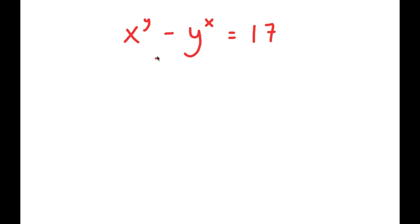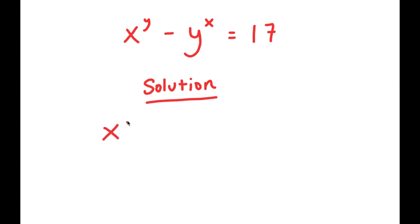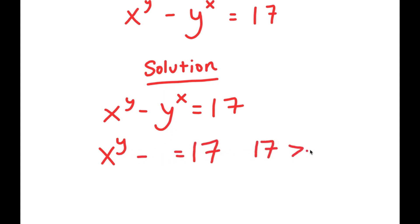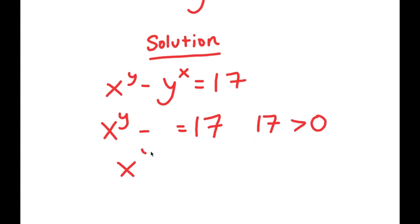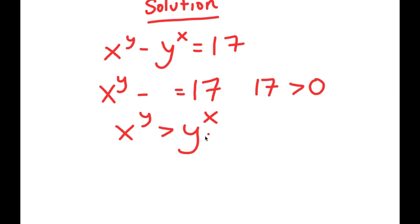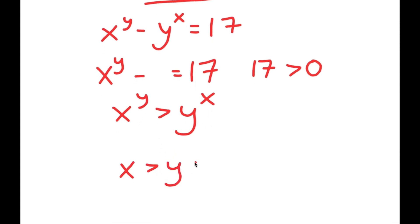In this problem, I have x to the power of y minus y to the power of x is equal to 17. To solve this, just by looking at this equation, notice how x to the power of y minus something equals 17, and 17 is greater than 0. This means x to the power of y is greater than y to the power of x, and this also must mean that x is greater than y, and y is greater than 0.